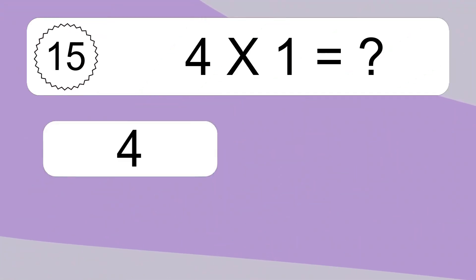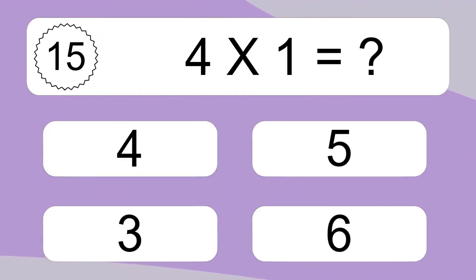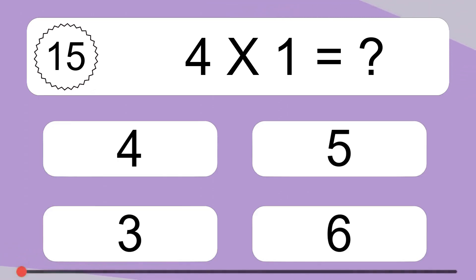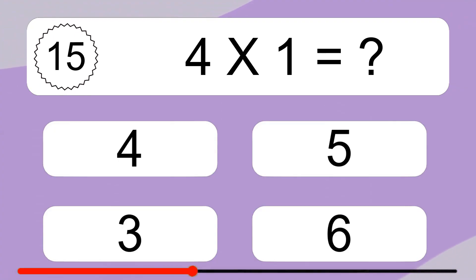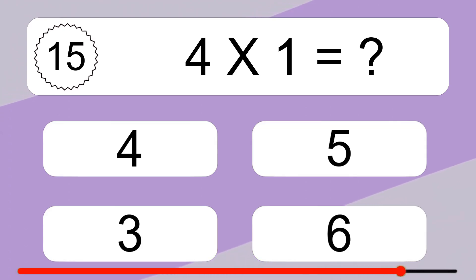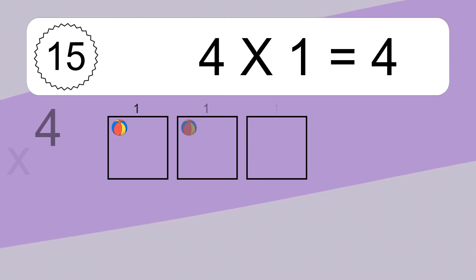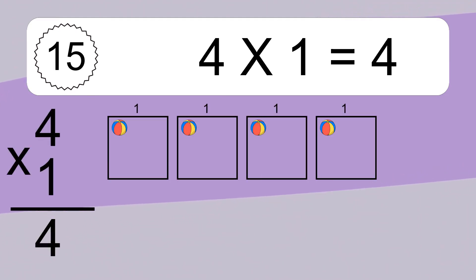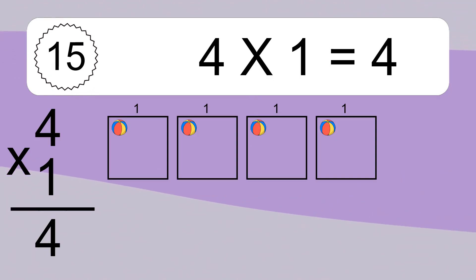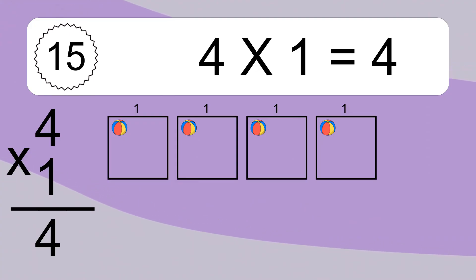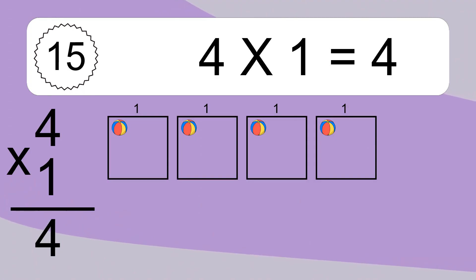4 times 1 equals what? We have 4 boxes, and each box has 1 colorful ball inside. If you count all the balls in all the boxes together, you will have 4 times 1 balls. This equals 4 balls.